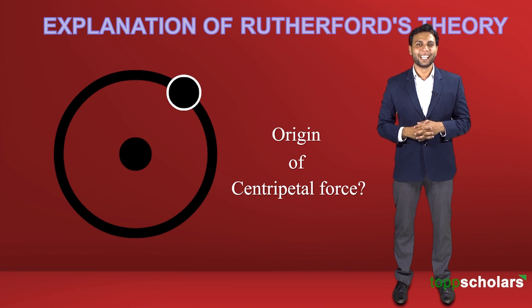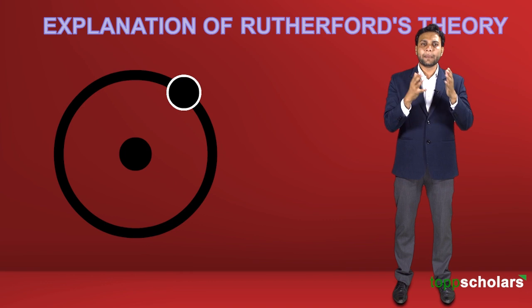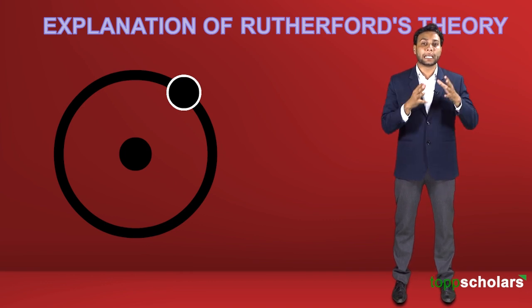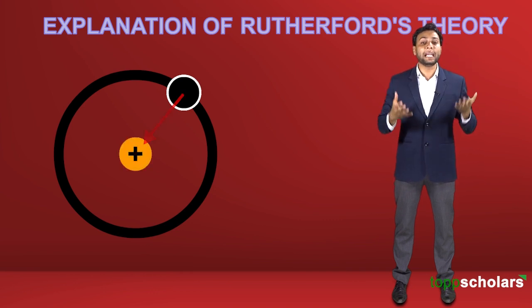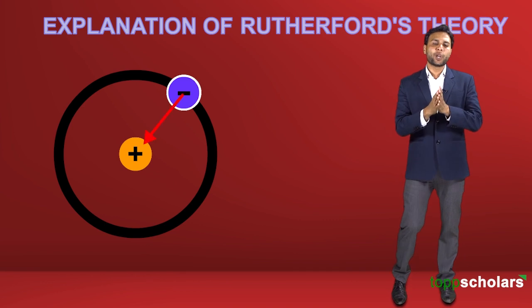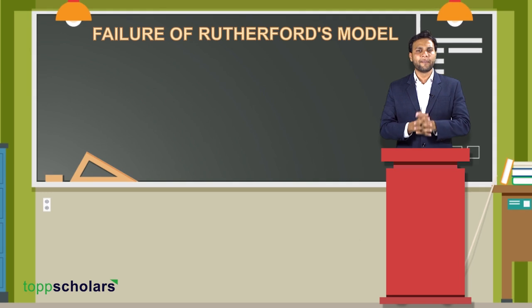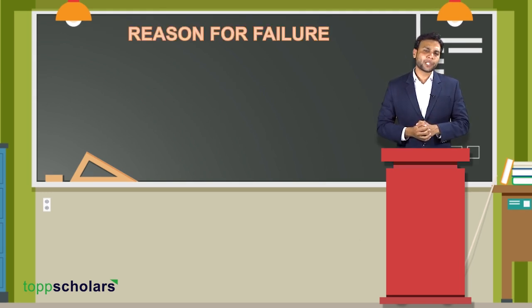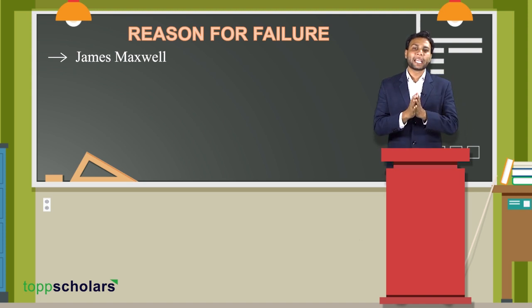As Rutherford answered this problem, another problem arose: if the electron revolved around the nucleus, what was the source of centripetal force? Rutherford solved this by explaining that the centripetal force derived from the electrostatic force of attraction between the positive and negatively charged particles, because unlike charges attract each other.